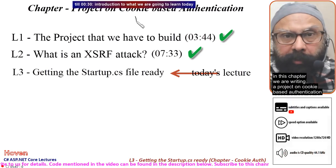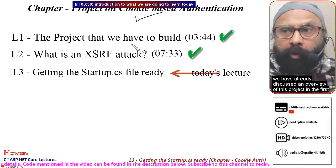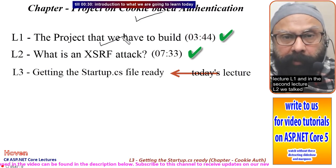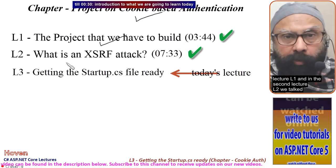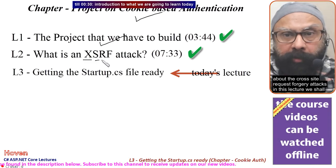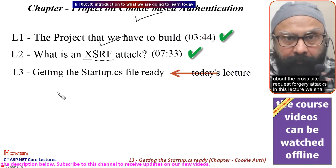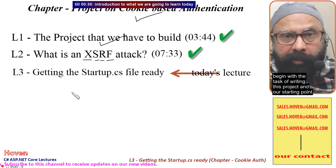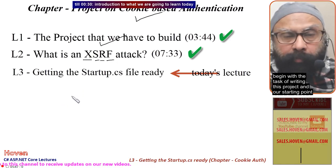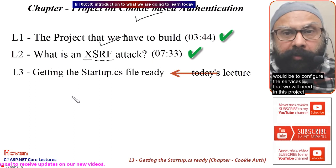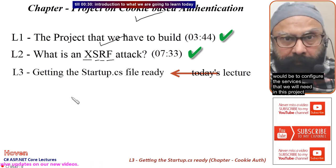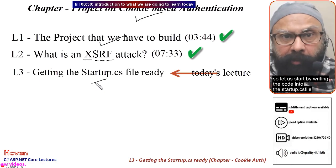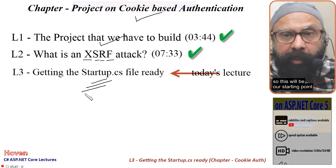This is a project on cookie-based authentication. We have already discussed an overview of this project in the first lecture L1, and in the second lecture L2 we talked about cross-site request forgery attacks. In this lecture we shall begin writing this project. Our starting point would be to configure the services we will need, and we will start by writing code into the startup.cs file.